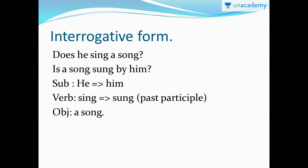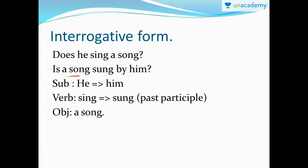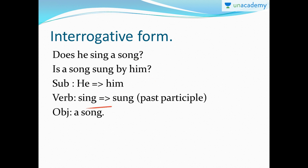What if the sentence is in the form of a question — an interrogative sentence? 'Does he sing a song?' Here 'he' is the subject, 'a song' is the object. The object comes in the beginning: since it is simple present, we use 'is.' Sing in past participle form is 'sung.' So it becomes: 'Is a song sung by him?' Always remember to retain the question mark — the interrogative form's question mark remains intact.